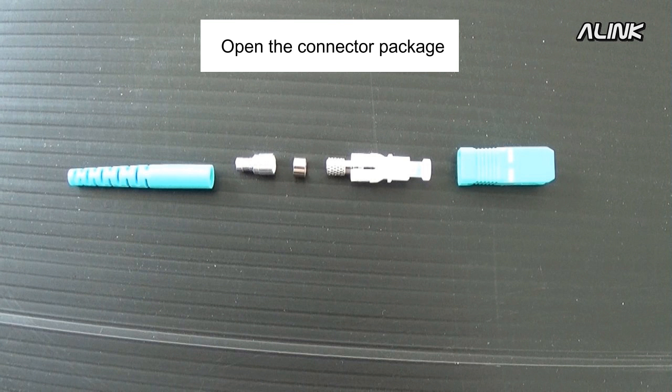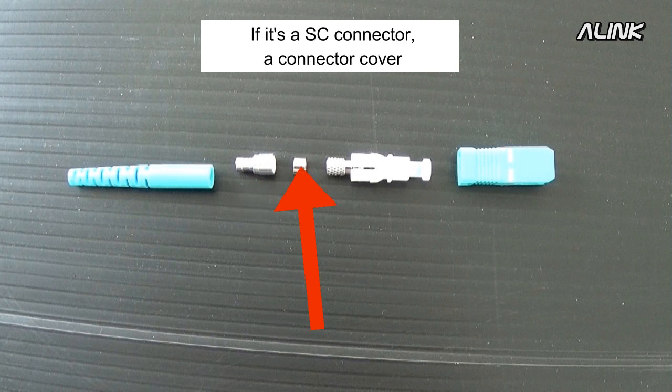Open the connector package. There should be a connector body, a cable cover, a bushing, a crimp sleeve, and if it's an SC connector, a connector cover.